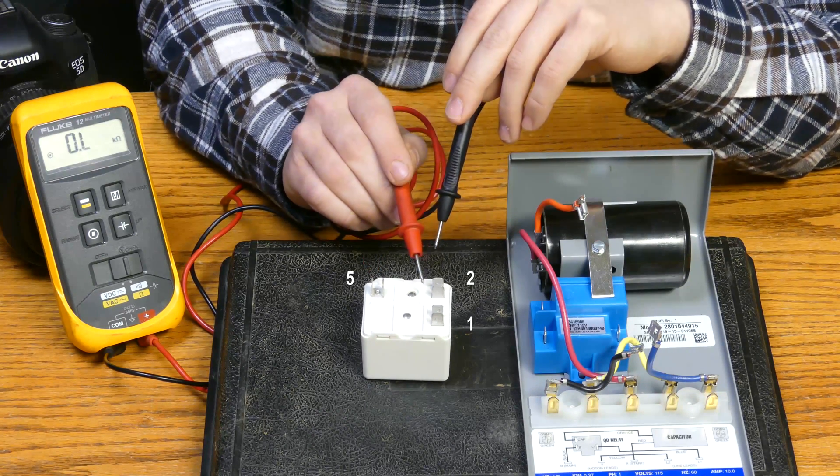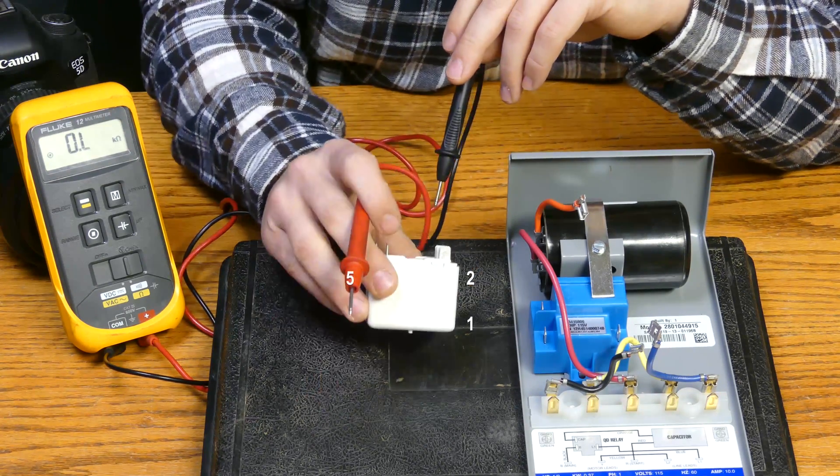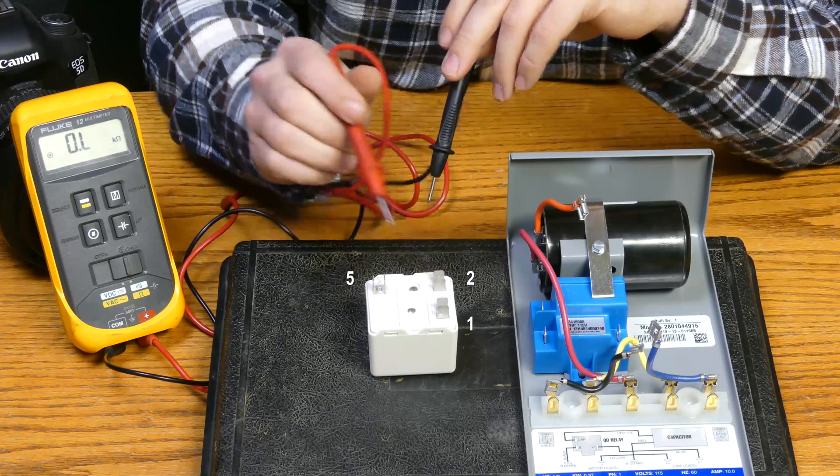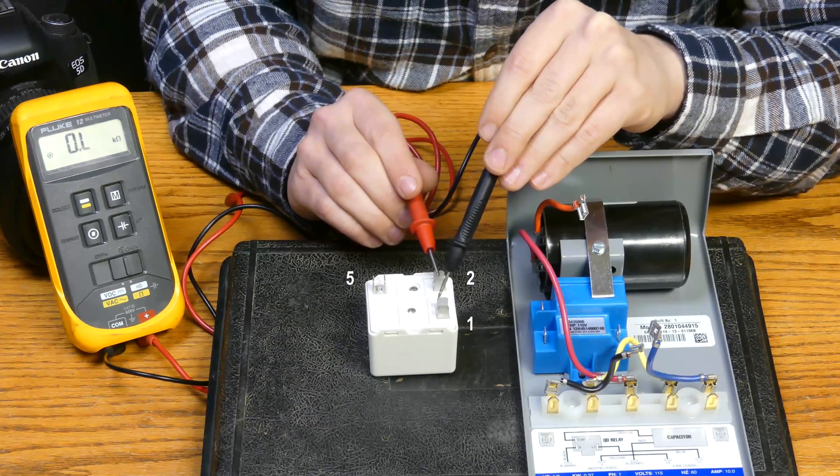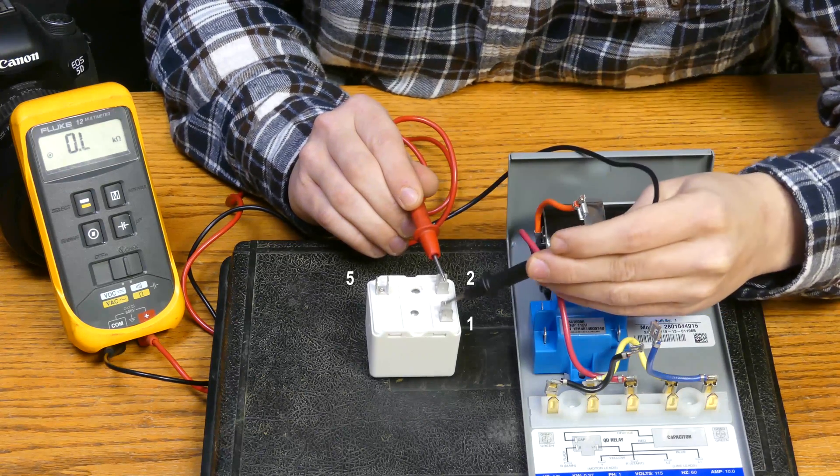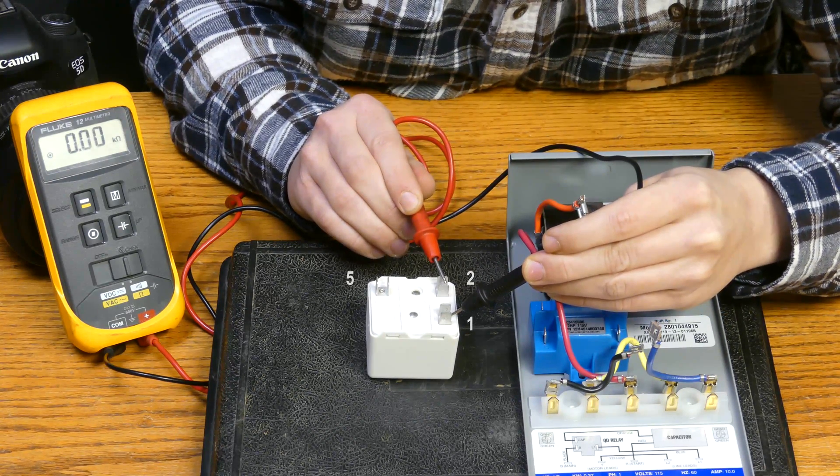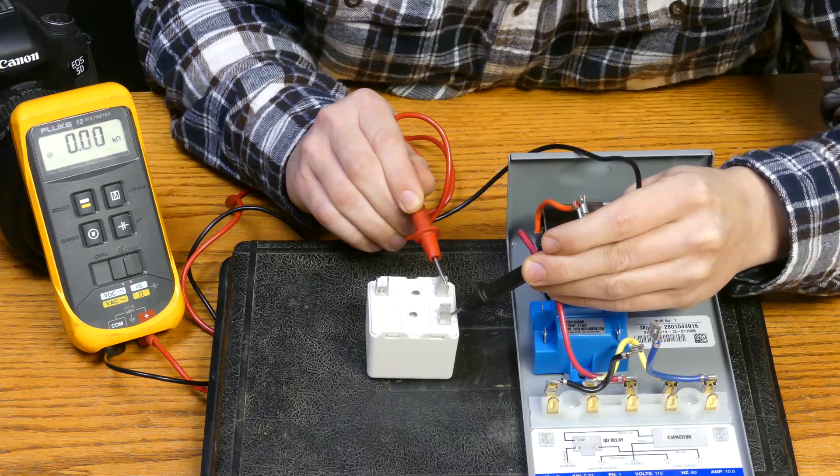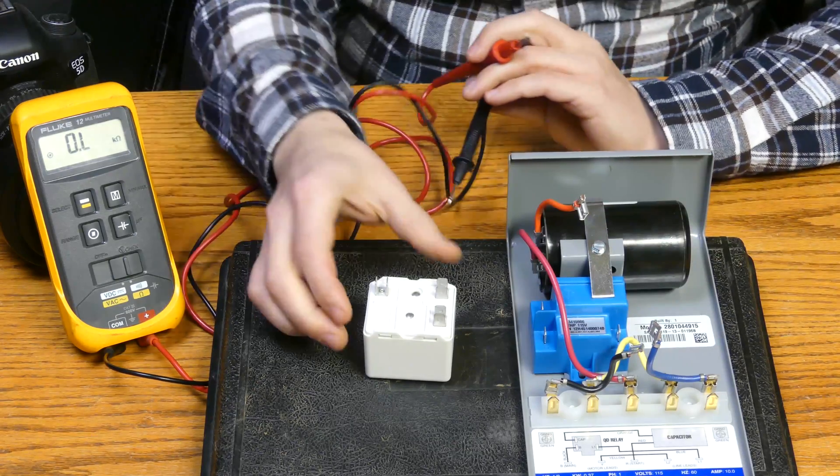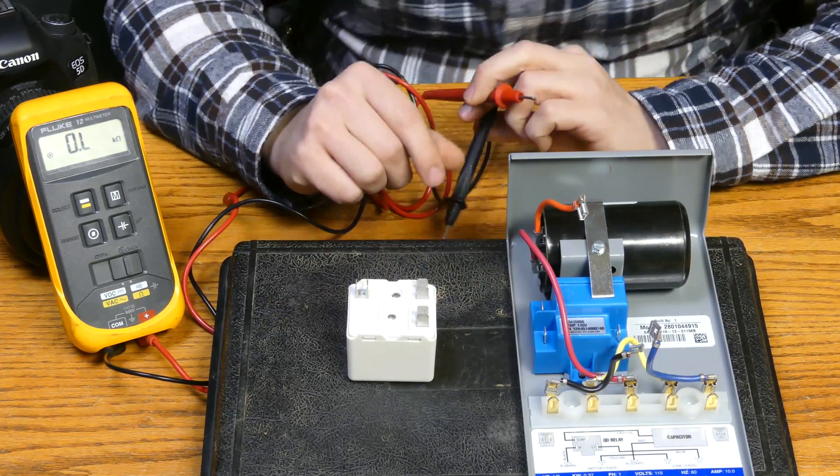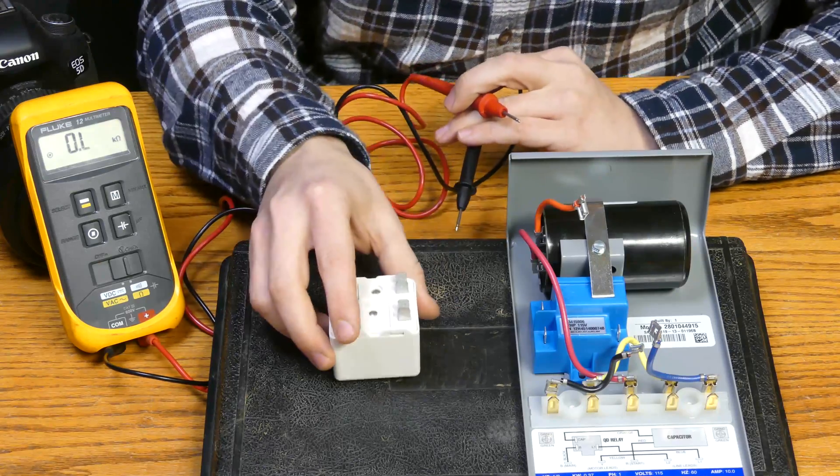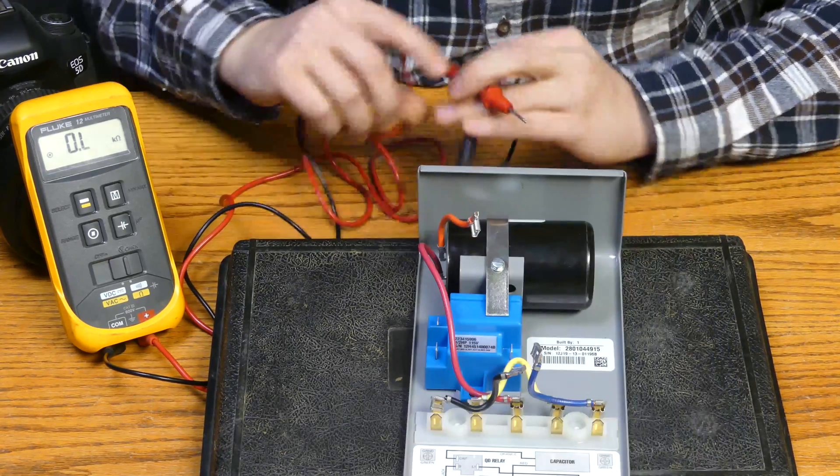Now the next one we're going to check is between 2 and 1, which is this one here. What we're looking for here is about 0. So let's get on there. So 0 it is. So we've successfully tested our relay. You may say well that's really easy, and that's because it is. So on to the next one here.